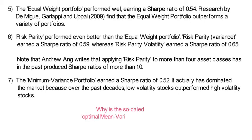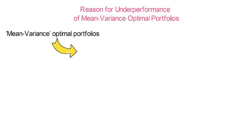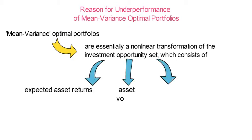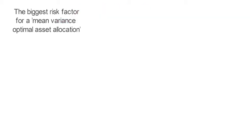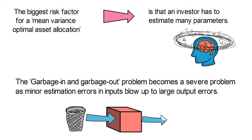Let's better understand why the so-called optimal mean variance portfolio is anything but optimal in real-life applications. Mean variance optimal portfolios are essentially a non-linear transformation of the investment opportunity set, which consists of expected asset returns, asset volatility, and pairwise correlations. The biggest risk factor is that an investor has to estimate many of these parameters — the garbage-in, garbage-out problem becomes severe, as minor estimation errors in inputs blow up to large output errors.